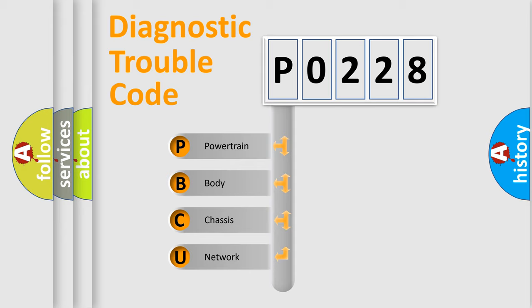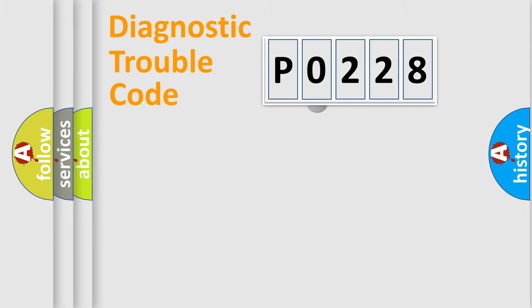We divide the electric system of automobile into four basic units: Powertrain, Body, Chassis, Network. This distribution is defined in the first character code.